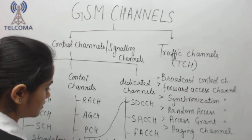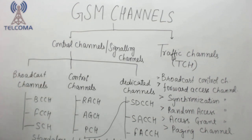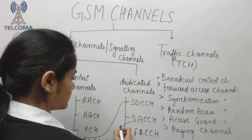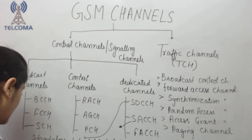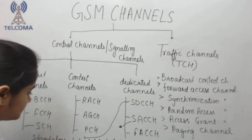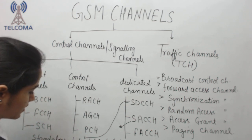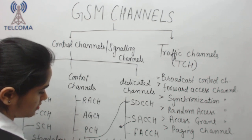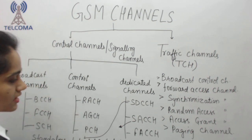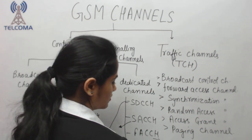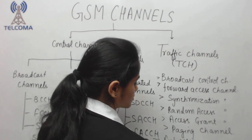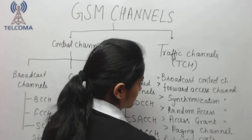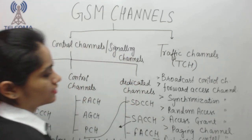SACCH stands for Slow Associated Control Channel, and FACCH stands for Fast Associated Control Channel. These are the GSM channels. Now let's discuss their functionality.